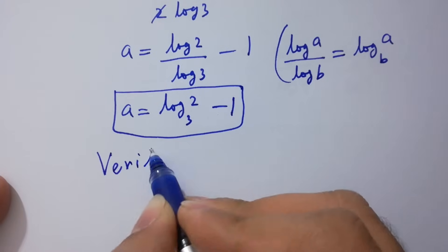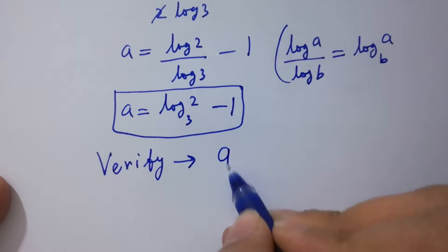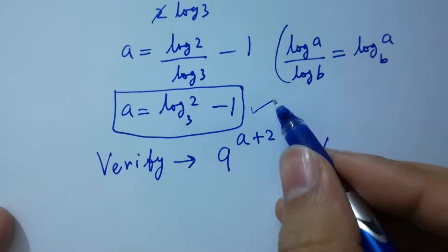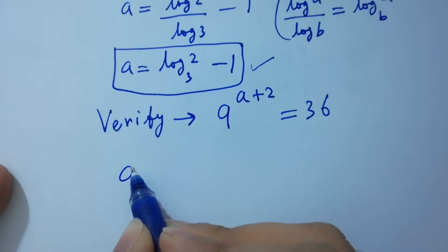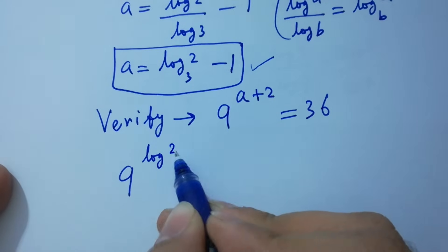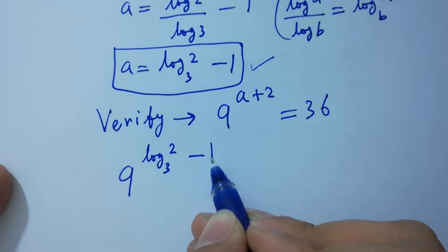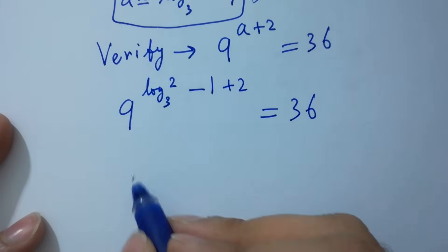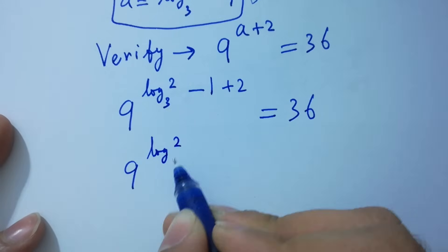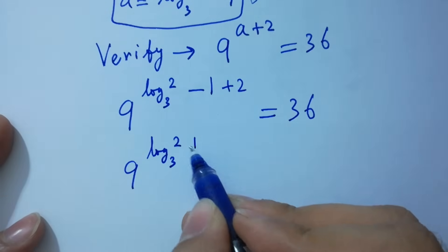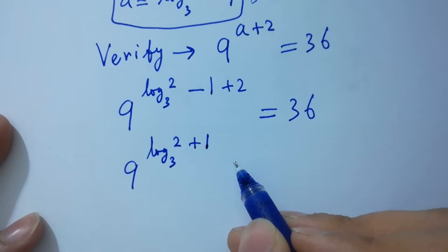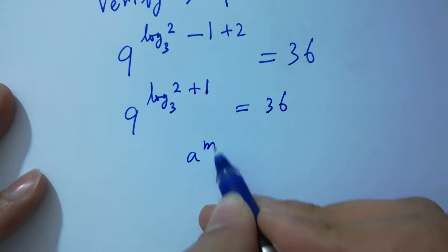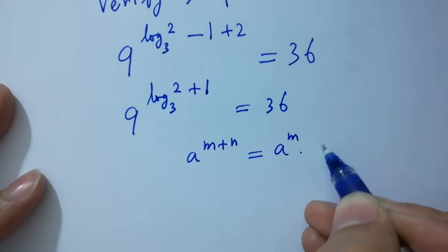Now verify: 9 to the power (a + 2) equals 36. Put the value in: 9 to the power (log base 3 of 2 minus 1 plus 2) equals 36, which is 9 to the power (log base 3 of 2 plus 1) equals 36. Using a to the power (m + n) equals a to the power m times a to the power n.